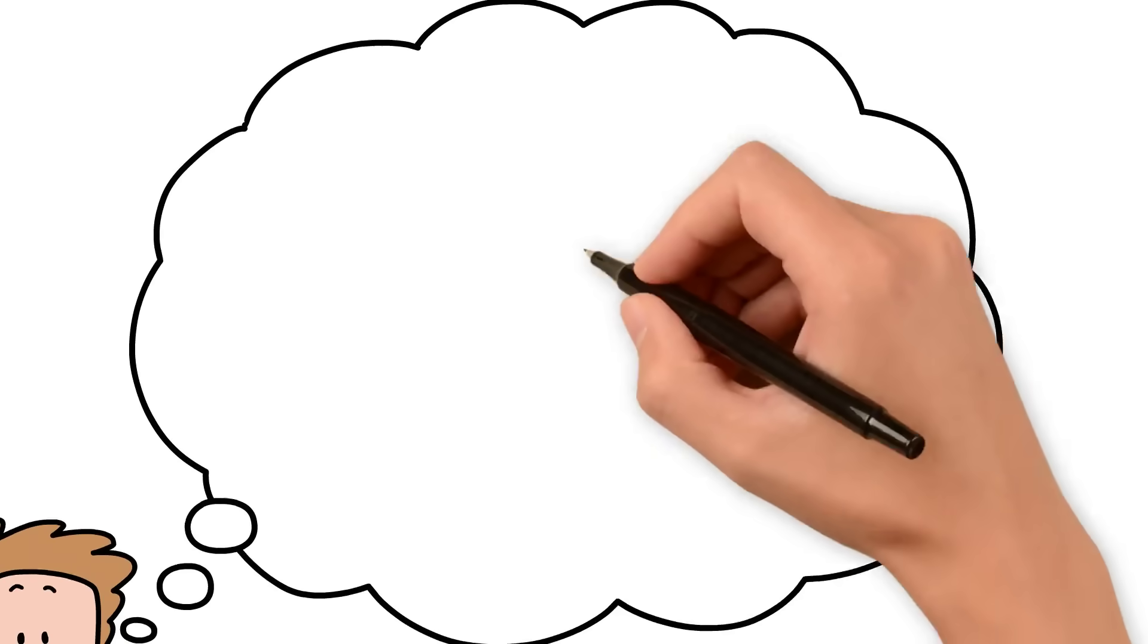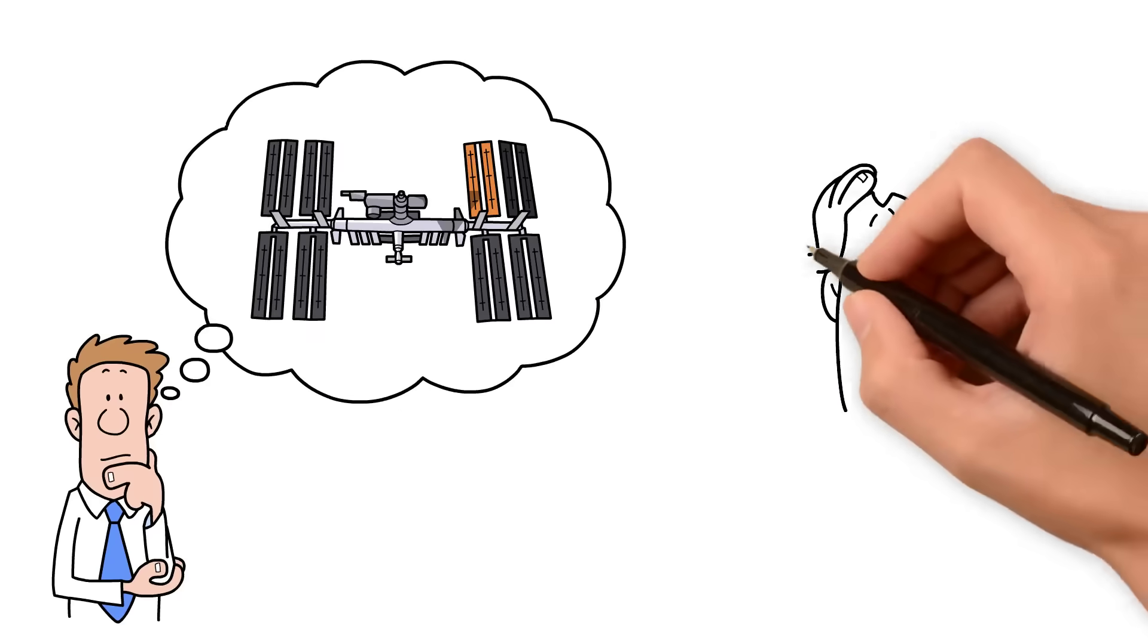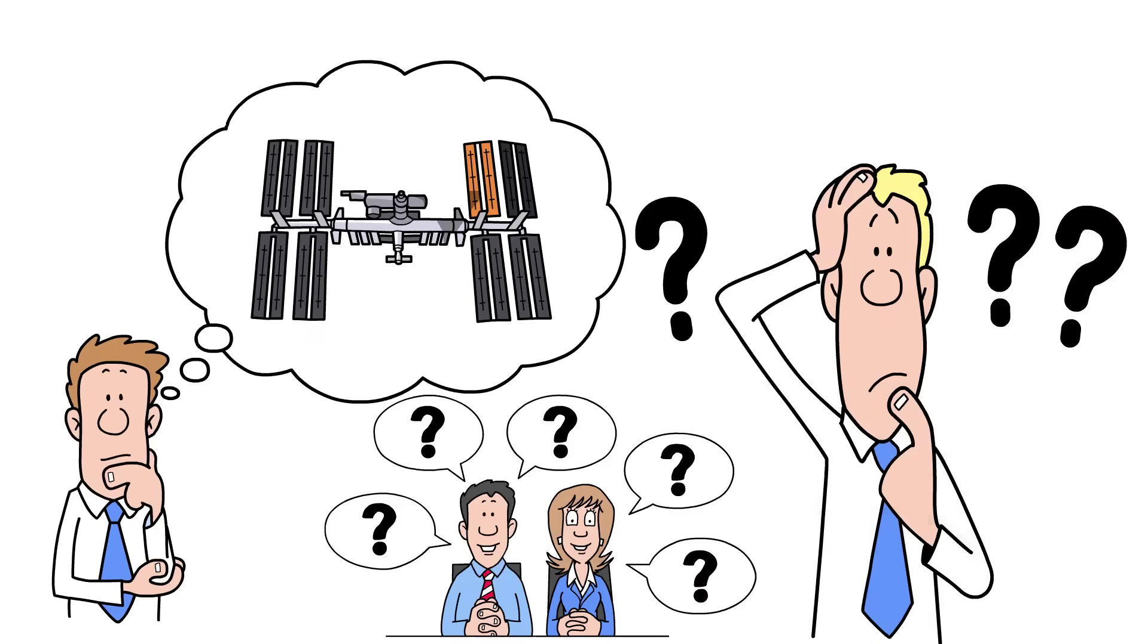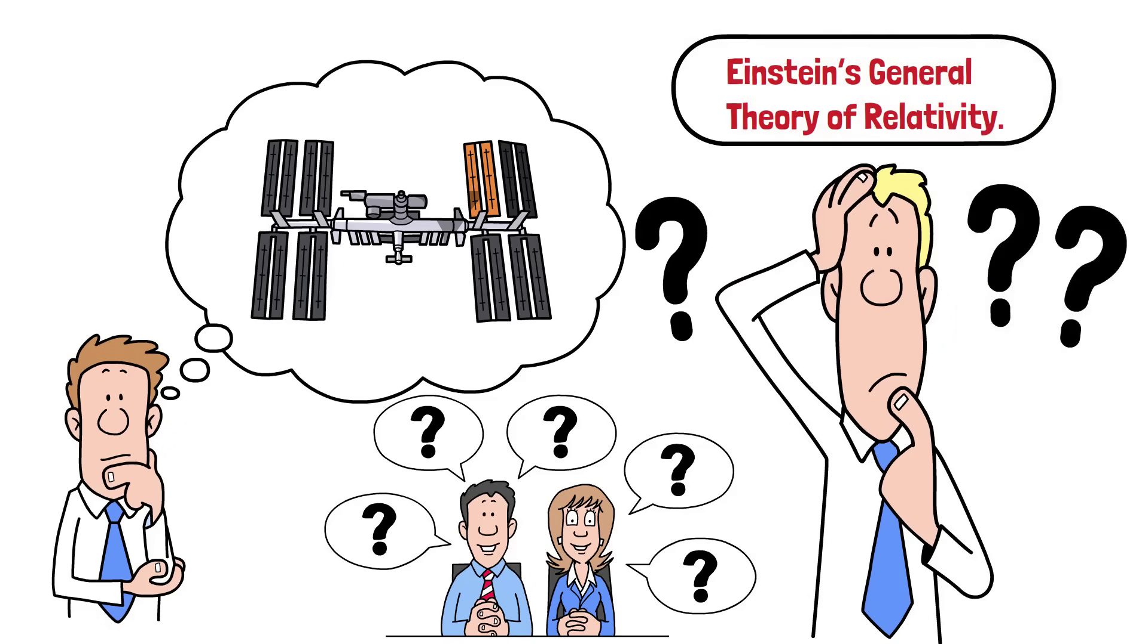Have you ever wondered why time moves slower on a satellite than it does on Earth? Or why light bends when it passes near a massive star? The answers to these mind-bending questions come from one of the greatest scientific achievements in human history, Einstein's General Theory of Relativity.